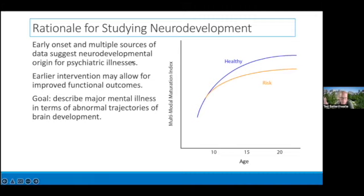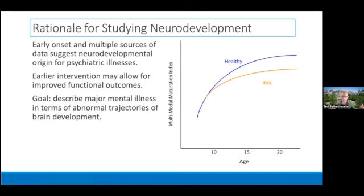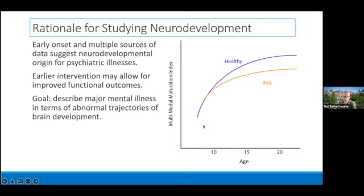My lab primarily focuses on studying brain development because I'm a psychiatrist, and increasingly the dominant paradigm in psychiatry is that most psychiatric illnesses are developmental in origin. This comes from epidemiological studies, translational studies in animals and humans. The broad goal is to understand how the brain develops normally so we can understand how abnormal brain development is associated with risks of different sorts of mental illness. This is really challenging because you need very large datasets with sampling at each age bin, and working with these datasets in a reproducible way is one of the biggest challenges we've been grappling with over the past 10 years.